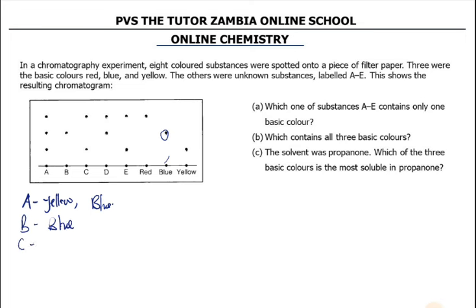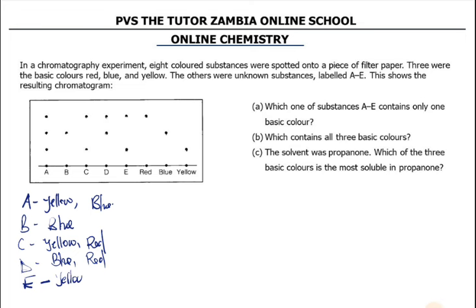Then let's go to C. Go to C's spot, then go across — C has got yellow. Then going further, C has also got red. Then D — going across from D, it has got blue, and D also has got red. And E — E has got yellow, and E has red as well.